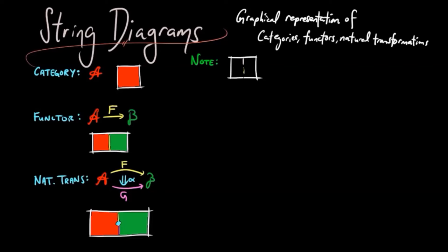Note that by naturality, string diagrams can be deformed by either raising or lowering the dots in the diagram, as long as the domain functor strings remain above the dot and the co-domain functor strings remain below the dot.